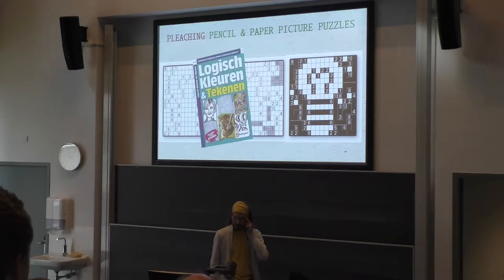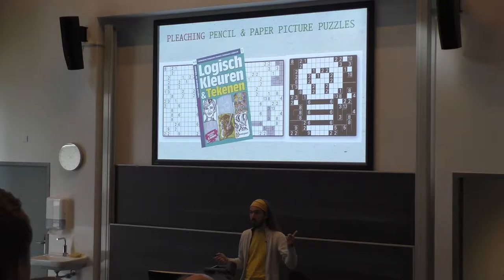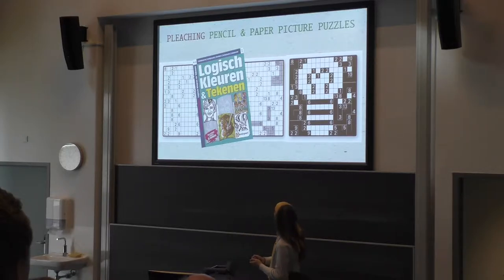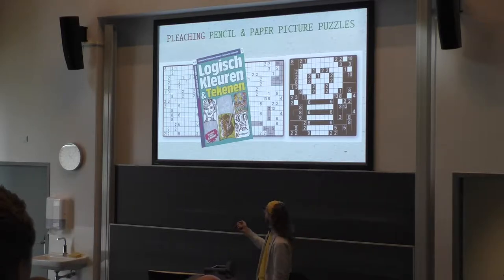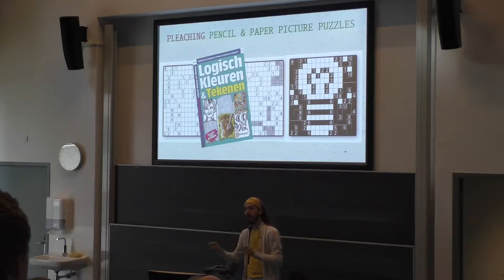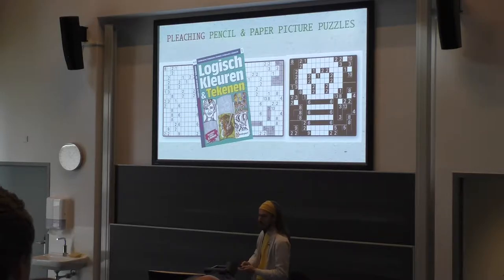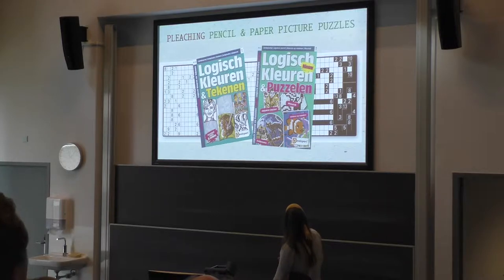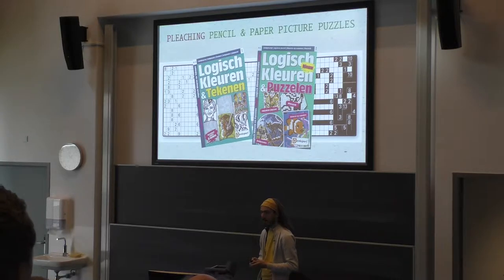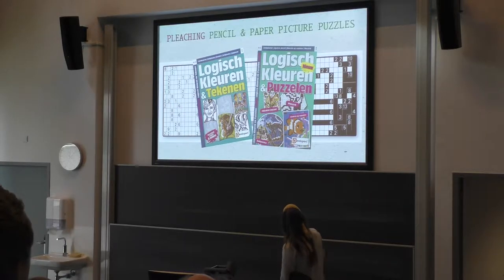That's a pencil and paper picture puzzle. It's quite popular. There are lots of booklets you can find in bookstores. This one is 'logisch kleuren en tekenen' — logical coloring and painting. But actually this one is even simpler: it's just grids with numbers and a list with which number should be which color, so there's no real thought required. But then there's also 'logisch kleuren en puzzeln,' where there is an actual logical puzzle behind all these images. This particular type is what they call here the 'zoekplaatje.'